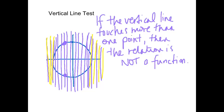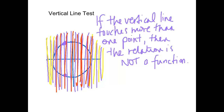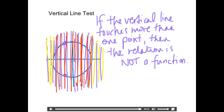Those middle parts of the circle were not good because everywhere along them the vertical line was touching more than one point at a time. So that means the circle is not a function. I hope you now understand the difference between the two.